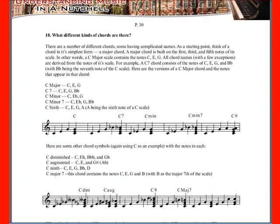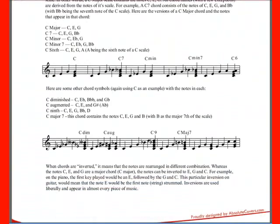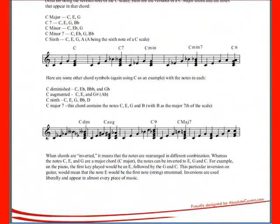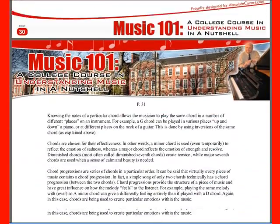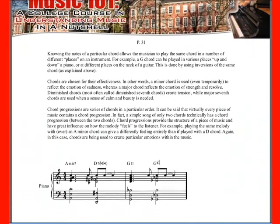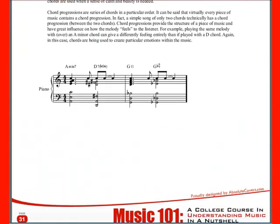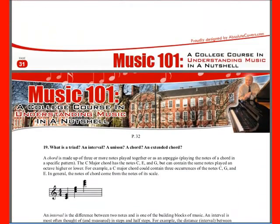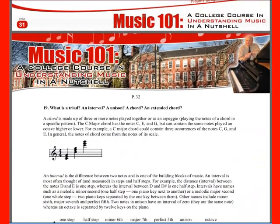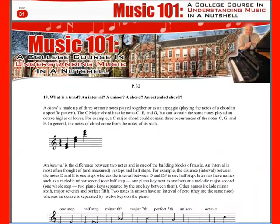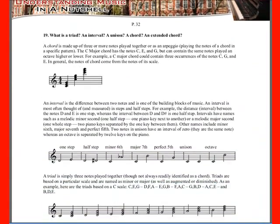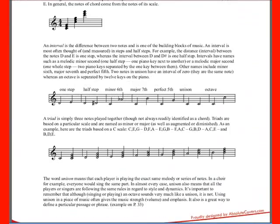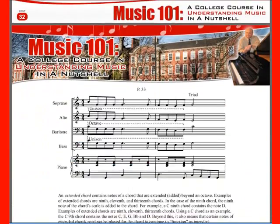Then chapter 18 — what different kinds of chords are there? And it talks about all the major, minor, diminished, ninth, seventh, and so on. And what is a triad? What's an interval? What's a unison? What's a chord? What's an extended chord? All those terms that you hear in music are clarified for you.